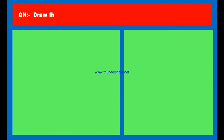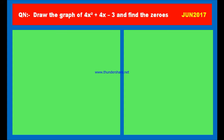Another question: Draw the graph of 4x squared plus 4x minus 3 and find its zeros. This question appeared in June 2017. Here is the solution. Let us consider the given quadratic polynomial as P of x. P of x is equal to 4x squared plus 4x minus 3. Let us draw the table for this, with rows for x, 4x squared, 4x, and minus 3.